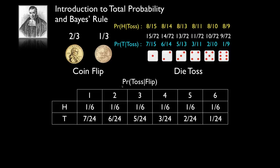So if the die toss shows a one, the probabilities of heads or tails are very close. But if the die toss shows a six, we're eight times more likely to have had a coin flip that resulted in heads than tails. This was an example illustrating total probability and Bayes' rule for an inference problem where there is a hidden event behind our observations.